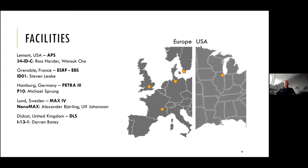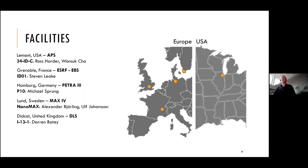The major facilities where this type of experiment can be done: at APS in the USA, most pioneering work was done at the 34-IDC beamline — contacts are Ross Harder and Monzok Chai. In Europe: ESRF ID01, Petra3 P10, MaxIV NanoMax here in Lund where we also develop this technique, and Diamond Light Source in the UK at beamline I13.